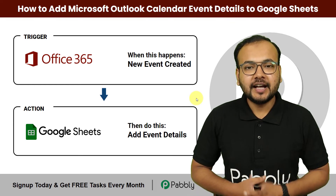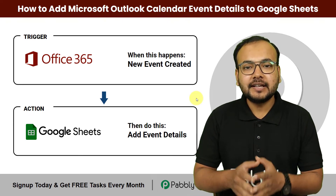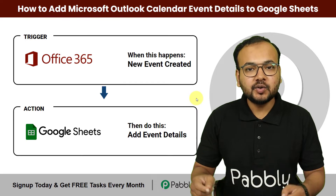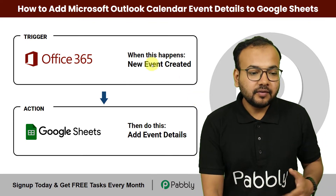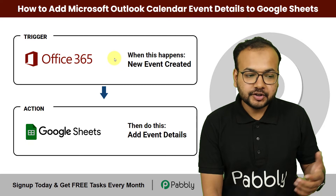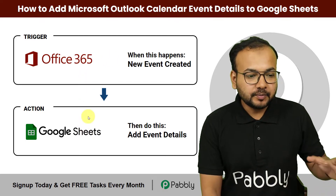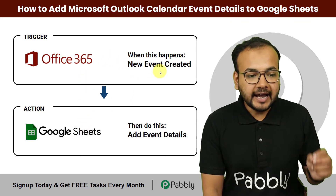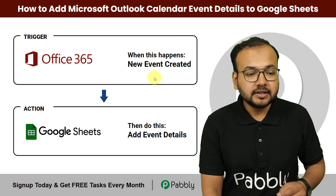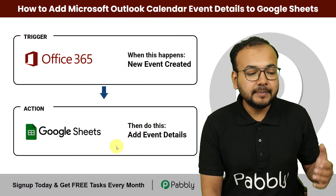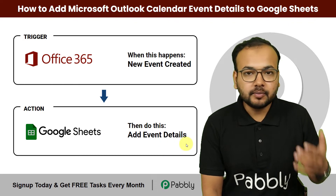In this video you will learn how you can add Microsoft Outlook calendar events into Google Sheets automatically. The flow of this automation works like this: after setting up this automation, whenever you add any new event in Microsoft Outlook calendar, the details of that event will be added into your Google Sheets spreadsheet automatically.